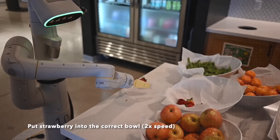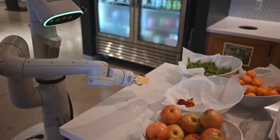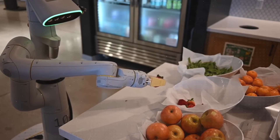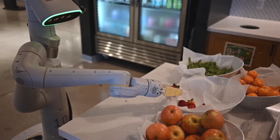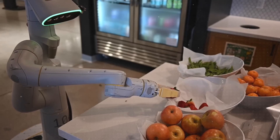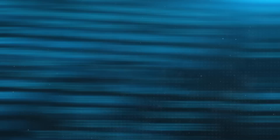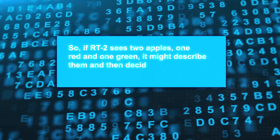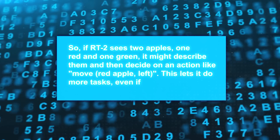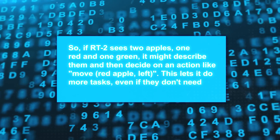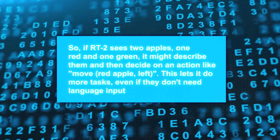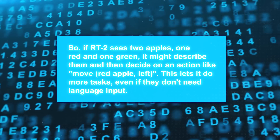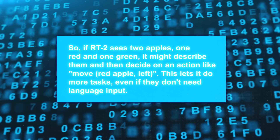Third, RT2 can turn visual-only jobs into robot actions, meaning only needing to see — no language needed. For example, sorting items by color. It does this by first using its VLM model to describe what it sees, then using the VLA model to decide on an action from that description. So if RT2 sees two apples, one red and one green, it might describe them and then decide on an action like 'move red apple left.' This lets it do more tasks, even if they don't need language input.